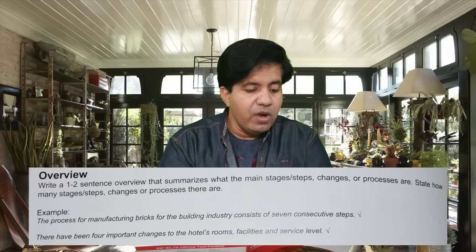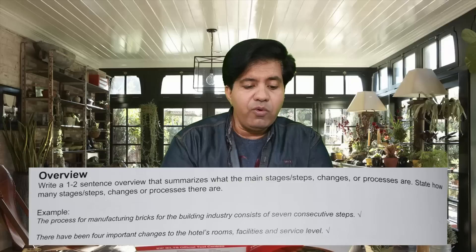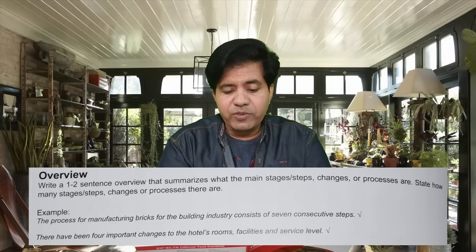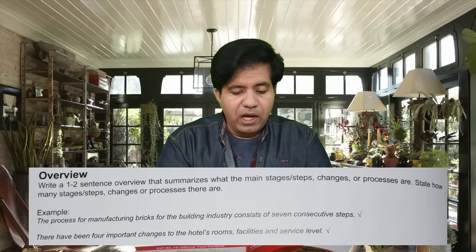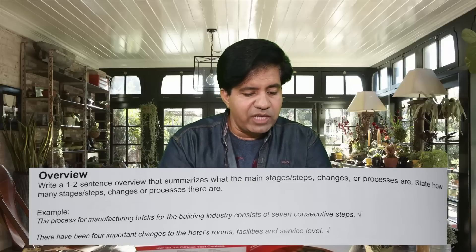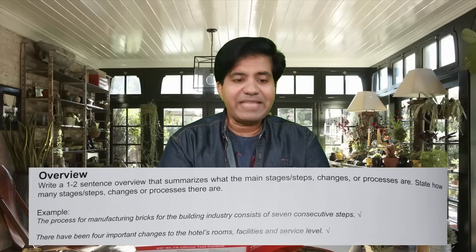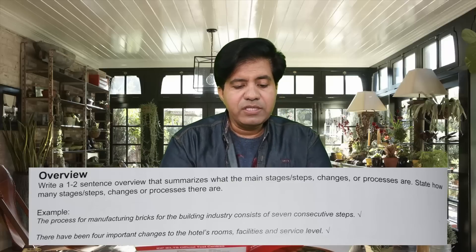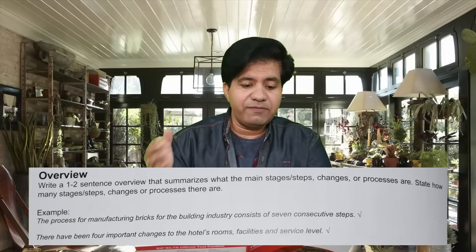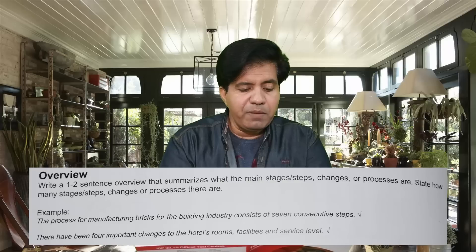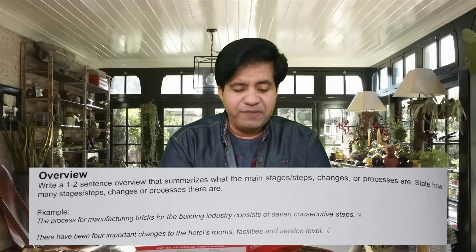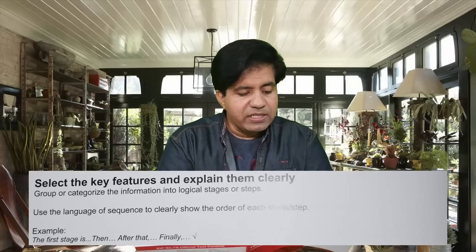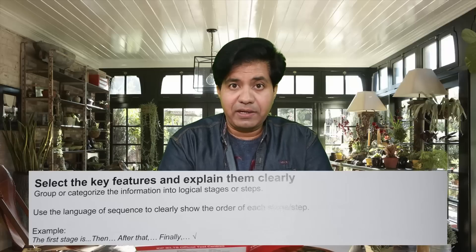After the introduction, you need to write an overview. Write a one to two sentence overview that summarizes the main stages, steps, changes, or processes. State how many stages, steps, changes, or processes there are. For example: 'The process for manufacturing bricks for the building industry consists of seven consecutive steps,' or 'There have been four important changes to the hotel's rooms, facilities, and service level.' That's how you write the overview.